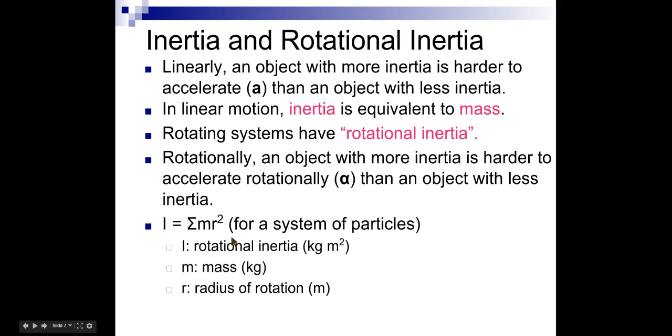The equation that we use for a system of particles is this. You add up all the particles, you multiply each one times its radius squared, and that's how you get what we call its rotational inertia. The units for it is kilogram times meters squared, or just kilogram meters squared. M is the mass, and R is the radius of the rotation.